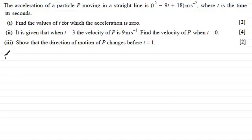Well, first of all with part one we're given that the acceleration, which I'll define as a, is equal to t squared minus 9t plus 18. And we've got to find the values of t for which that acceleration is 0. So it's just a case of saying when a equals 0 and solving the equation.